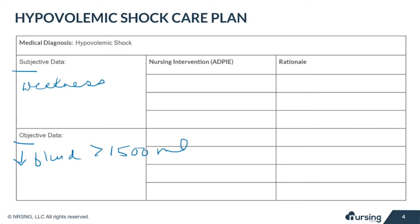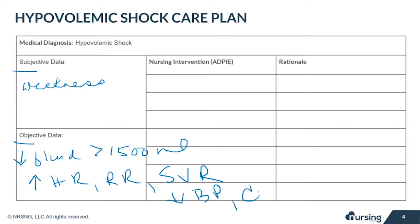Objective data might include a measured fluid loss greater than 1500 milliliters, hemorrhage or burn, increased heart rate, respiratory rate, systemic vascular resistance, and also decreased blood pressure, CVP, level of consciousness, urine output, and cool and clammy skin.